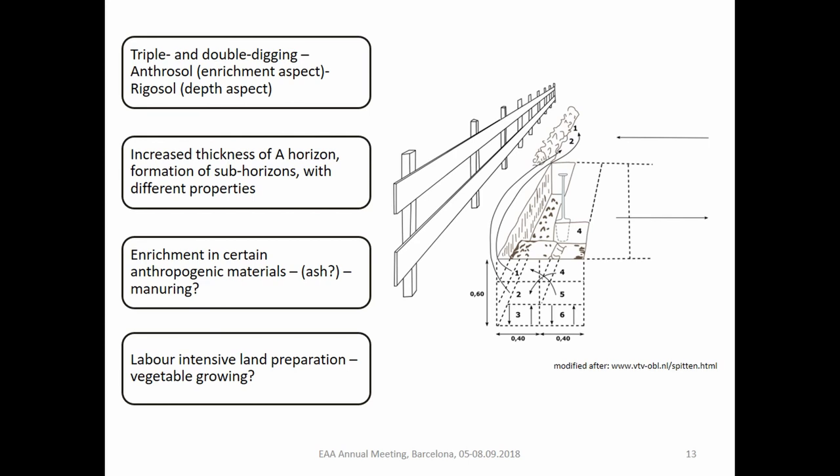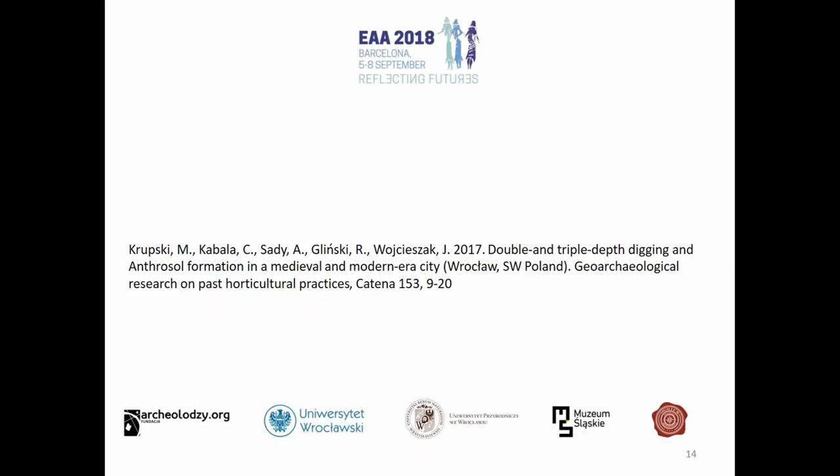We suggest it was used for vegetable growing — as a vegetable garden. Such soils might be very common in suburban areas of medieval towns and modern era cities, because gardens were there. We know that from written sources and from depictions. So we might find these more often, if the stratigraphy is preserved — because that's the basic requirement. Thank you for your attention.